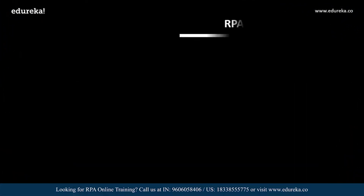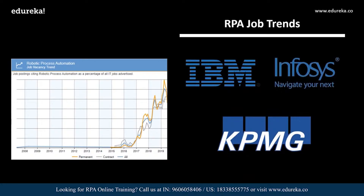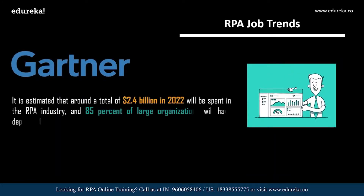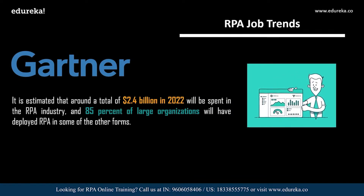As you can see on my screen, the number of RPA developer jobs in the United Kingdom is increasing on a large scale. RPA developer career opportunities will only shoot through the roof, with both startups and well-established companies such as IBM, Infosys, and KPMG offering lucrative salaries. According to Gartner, around 2.4 billion US dollars is estimated to be spent in the field of RPA by 2022, and 85% of large organizations will have deployed RPA in some form.